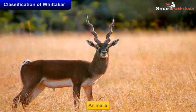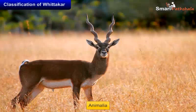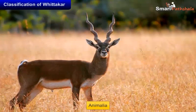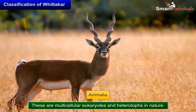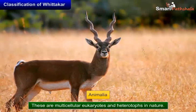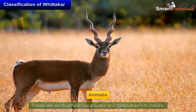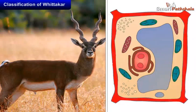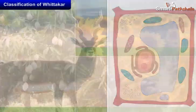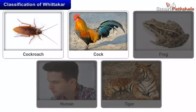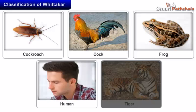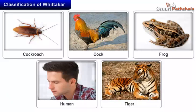5. Animalia. These are multicellular eukaryotes and heterotrophs in nature. Cell wall is absent. They show limited growth which stops after maturity. Examples: Cockroach, Cock, Frog, Human, Tiger, etc.